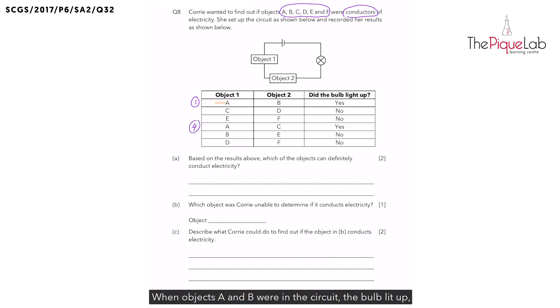When objects A and B were in the circuit, the bulb lit up. And when objects A and C were in the circuit, the bulb also lit up. So the pathway that I'm highlighting now, must it be an open or closed circuit? It must be a closed circuit that allows electricity to flow through both objects, allowing the bulb to light up. So in this case, objects one and two